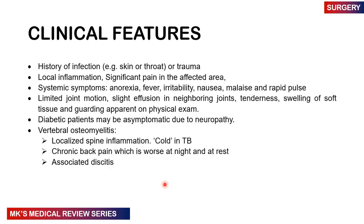What are the clinical features? Generally there'll be a history of trauma, maybe a skin or throat infection, or a history of an infection. You may have local inflammation and significant pain in the affected area, and systemic symptoms like anorexia, fever, irritability, nausea, malaise, and a rapid pulse. There may be limitation of joint movements, slight joint effusion in neighboring joints, tenderness, soft tissue swelling, and guarding on physical examination. Diabetic patients may actually be asymptomatic due to neuropathy.